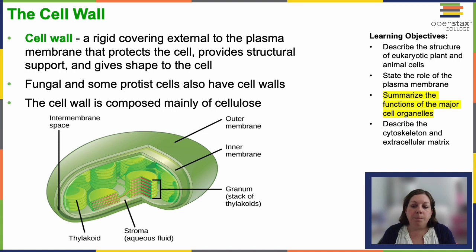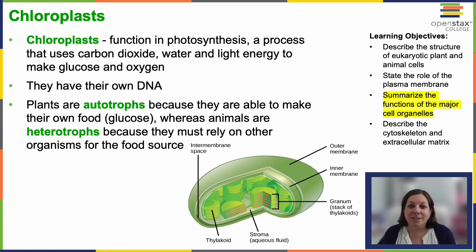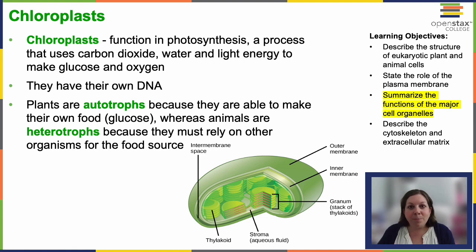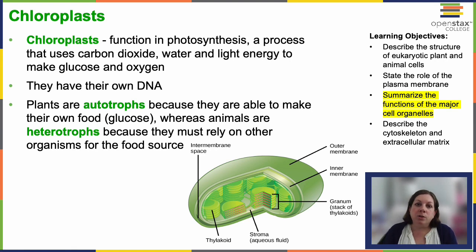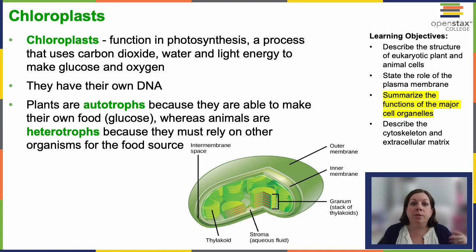The cell wall is mostly composed of cellulose. Chloroplasts are the organelle for photosynthesis. Photosynthesis utilizes carbon dioxide, water, and energy from light to make glucose and oxygen. Oxygen is a byproduct — a happy byproduct for us — but the main goal of photosynthesis is glucose. Plants are called autotrophs because they make their own food, whereas animals are heterotrophs, meaning they eat other organisms and rely on them for their food source.